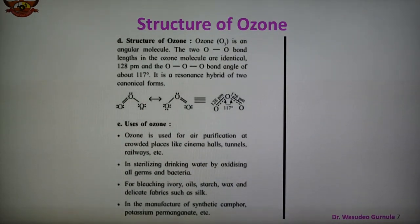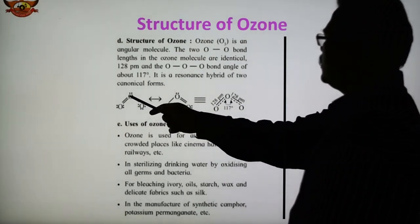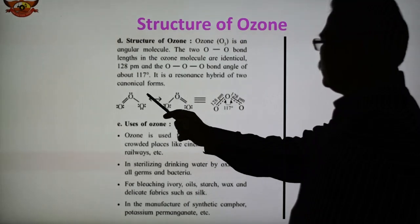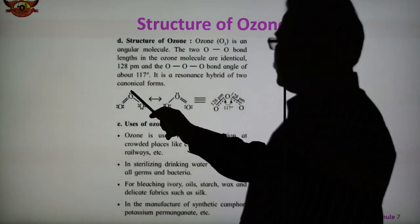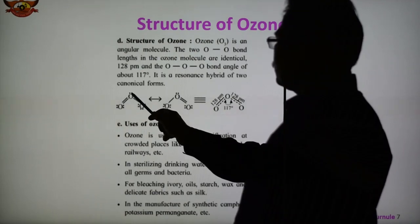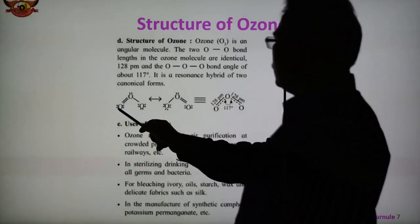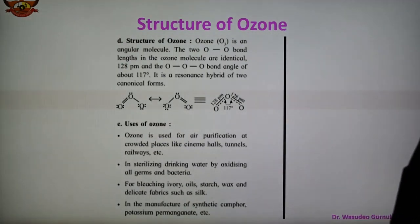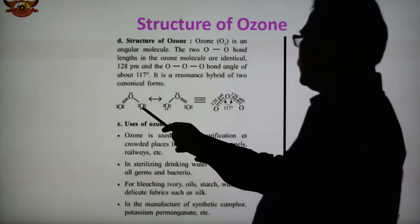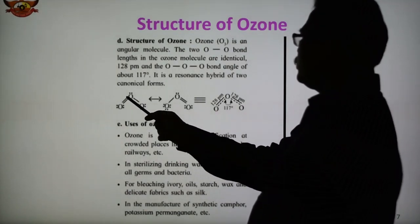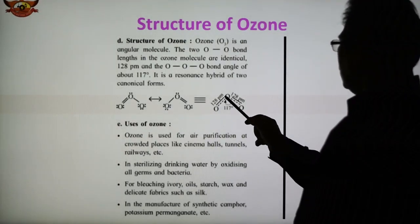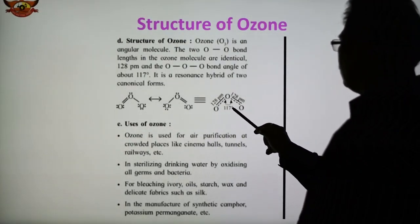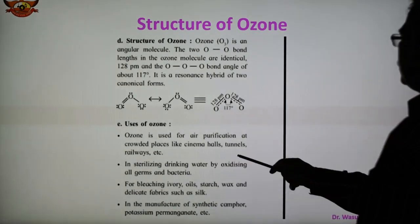In the structure of ozone, the molecular formula is O3. The structure shows O double bond O and single bond O — these are canonical structures where the position of the double bond is changed. Both structures are similar. Oxygen has atomic number 8 with 6 valence electrons participating in bond formation. The O-O-O bond angle is 117 degrees and the bond length of the double bond is 128 pm; both bonds are similar.